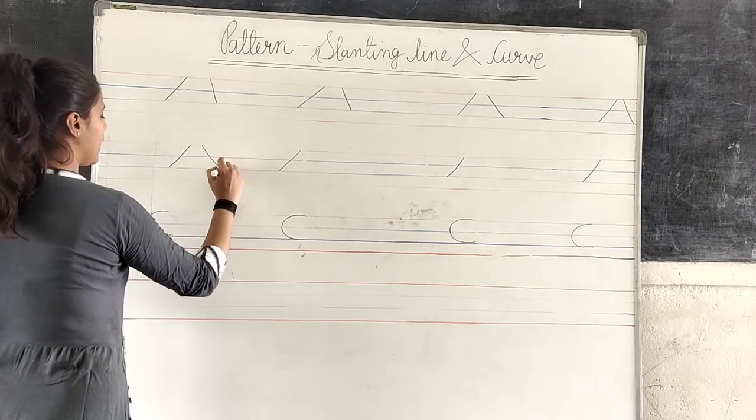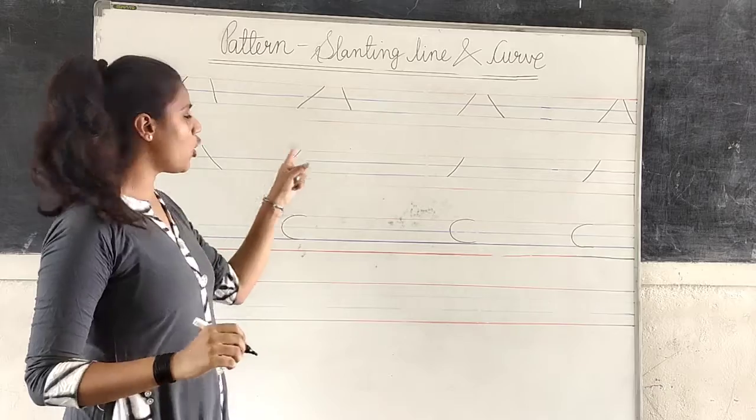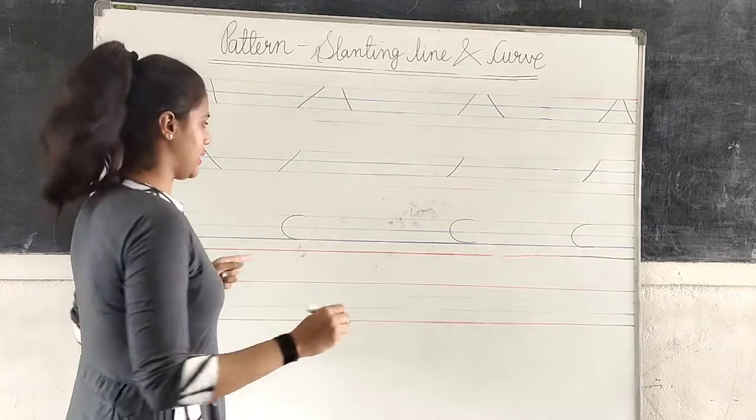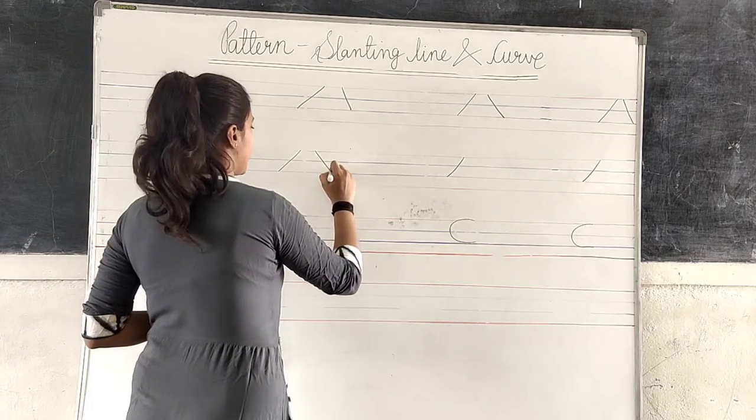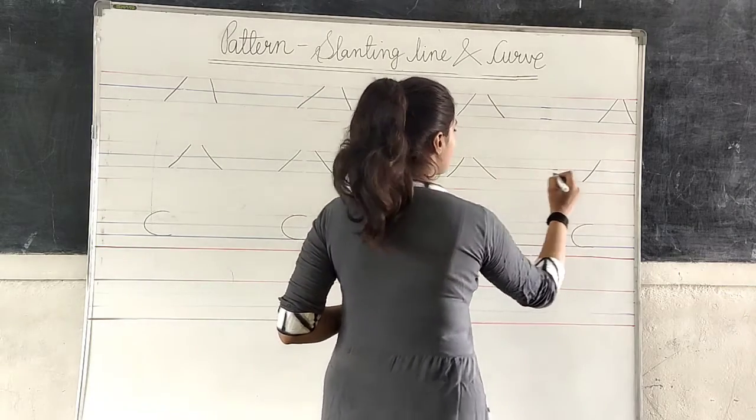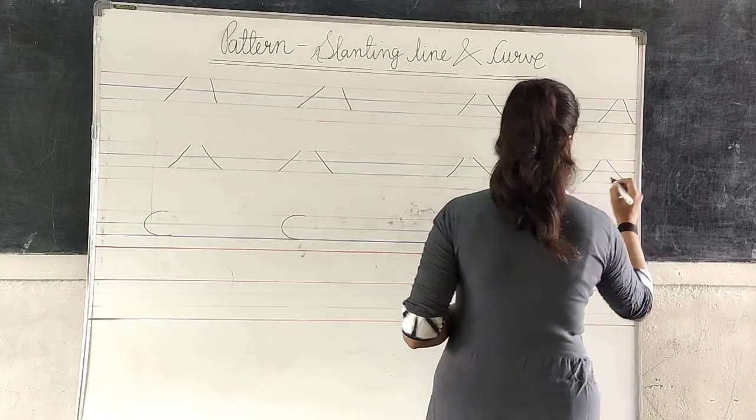Standing line. Now look, there is a little rocker, and there is a little rocker. Both are the standing line from first line to third line. Okay students?